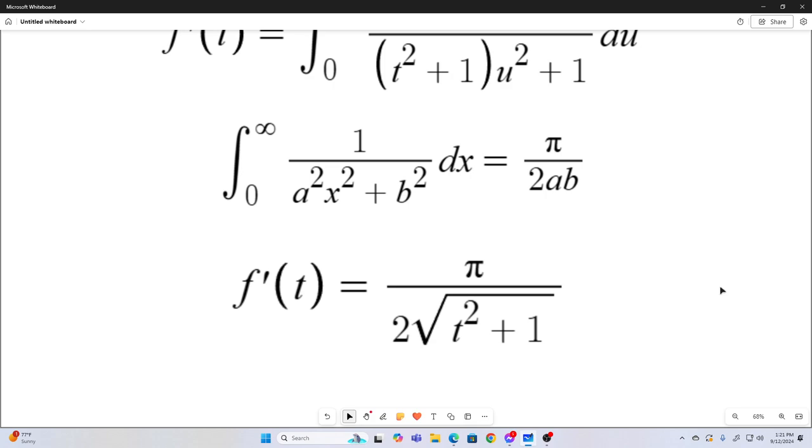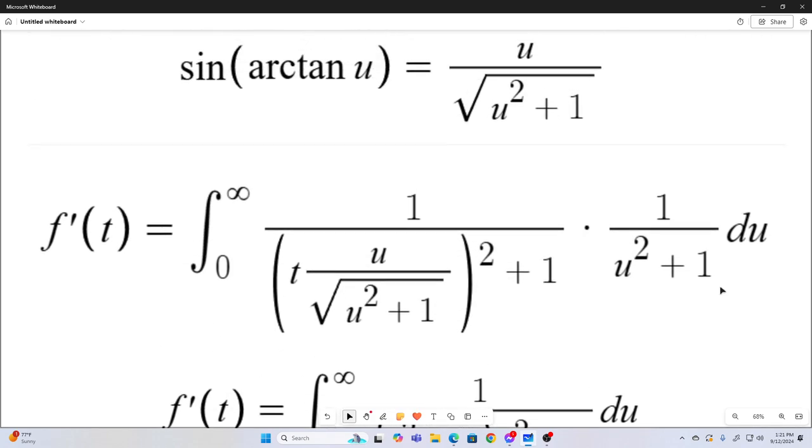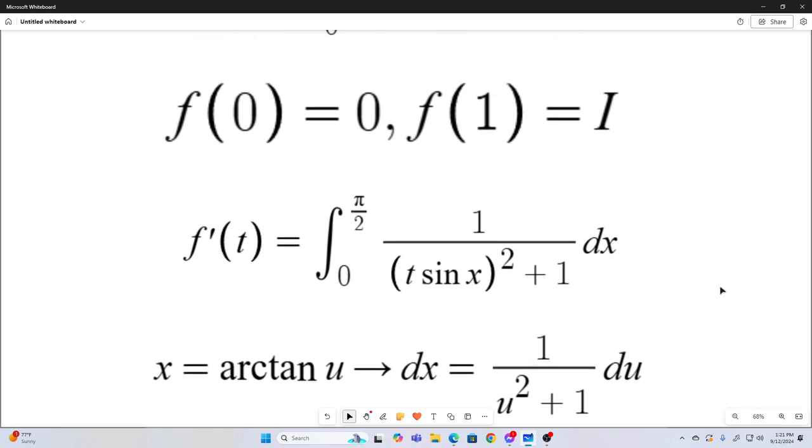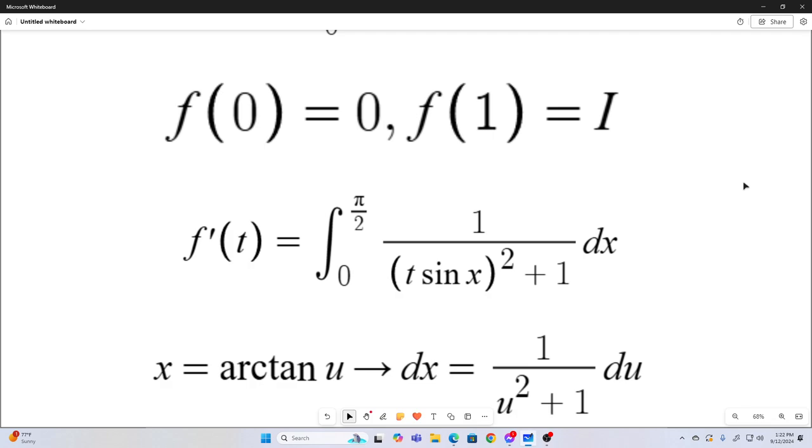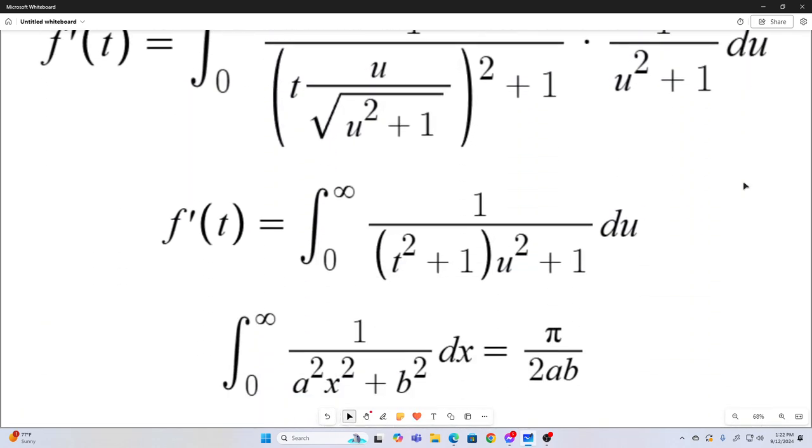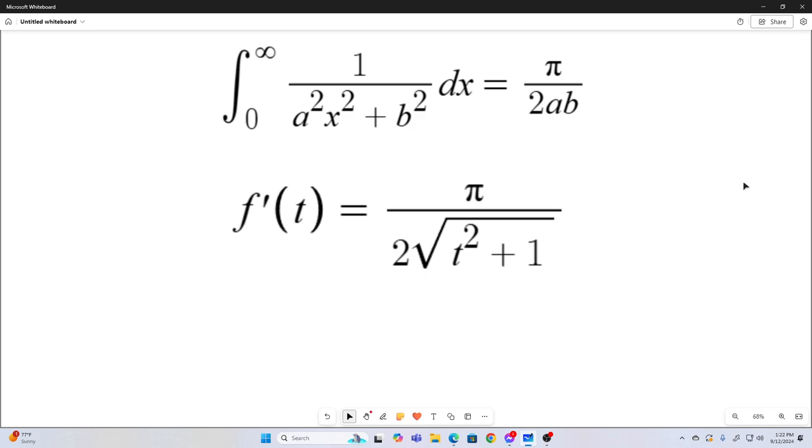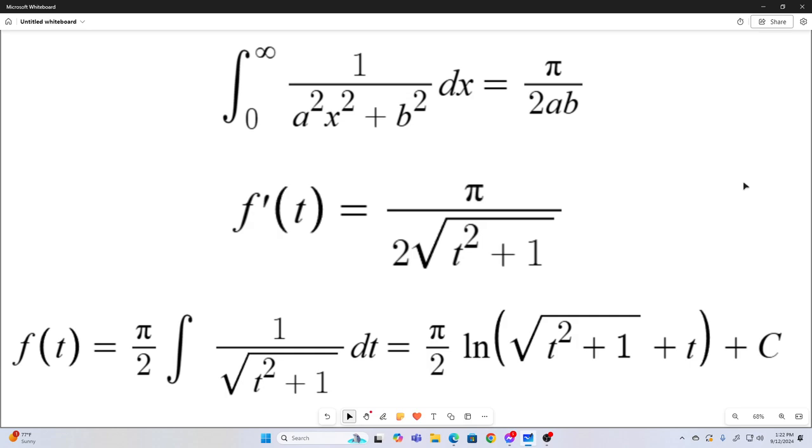So now we have a closed form expression for f prime of t, but we are not interested in f prime of t. We need f of t, so we can plug in 1 and get our target integral. So we can get to f of t by anti-differentiating f prime of t with respect to t. So f of t is equal to pi over 2 times the integral of 1 over t squared plus 1 dt.